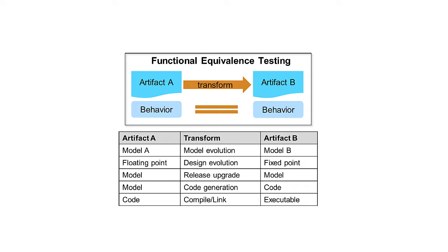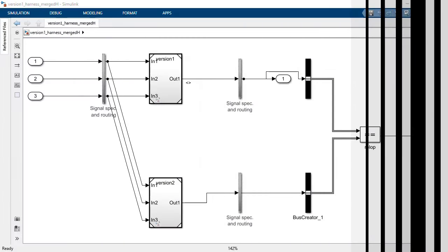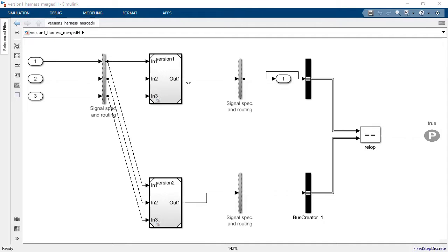Functional equivalence testing is a workflow which involves simulating two models, or a model and its generated code, and ensuring their outputs are equivalent. This technique does not formally prove functional equivalence in all cases. Formal functional equivalence is a static analysis-based technique to formally prove that two Simulink models are functionally equivalent.